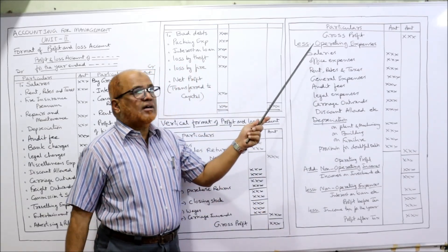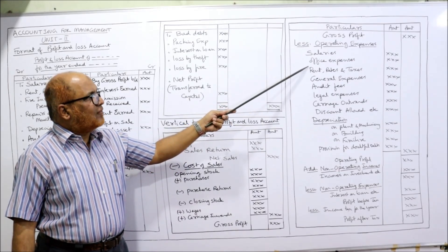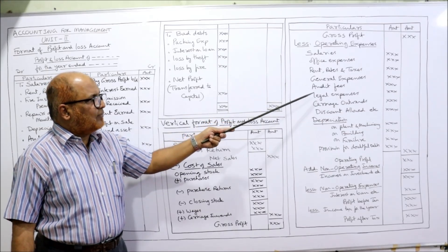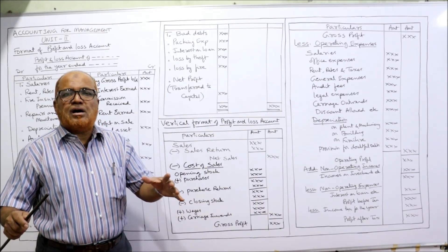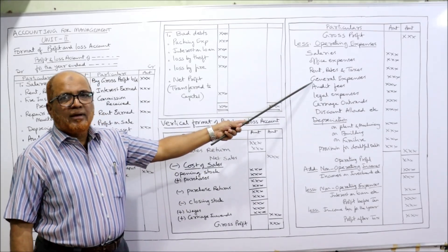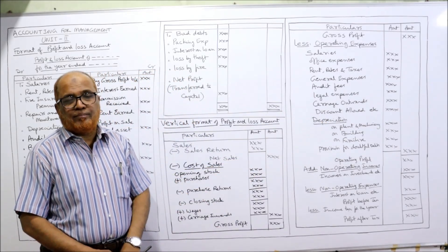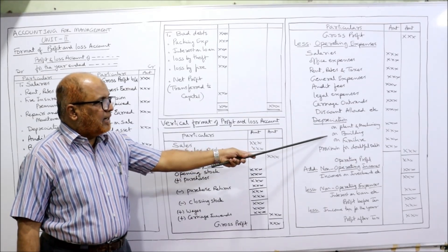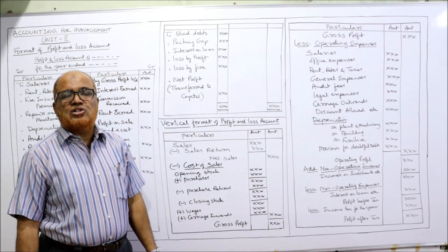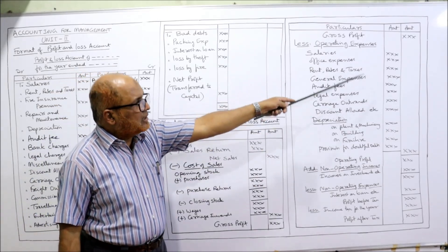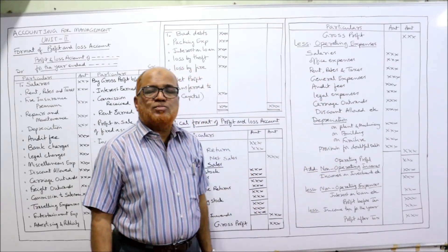From gross profit, deduct all operating expenses — the indirect expenses — such as salaries, office expenses, rent, rates and taxes, general expenses, audit fees, legal expenses, carriage outward, discount allowed, depreciation on plant and machinery, buildings, furniture, provision for doubtful debts, and bad debts. Take the total in the inner column and write the final total in the outer column.